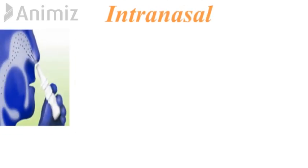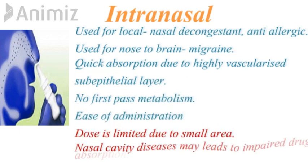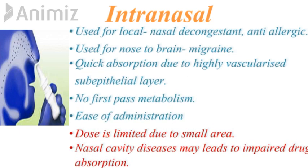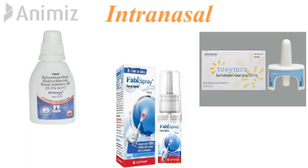Next is intranasal route of administration, in which the drug is administered via the nasal cavity. It is used for local actions like nasal decongestant and anti-allergic actions, and is sometimes used for nose-to-brain delivery for migraine treatment. The rate of absorption is quick because of the highly vascularized area and there is no first-pass metabolism. Limitations include a limited dose due to the small area, and nasal cavity diseases may lead to impaired drug absorption. Examples include nasal decongestants, anti-allergic sprays, and Tosymra for nose-to-brain delivery for migraine treatment.